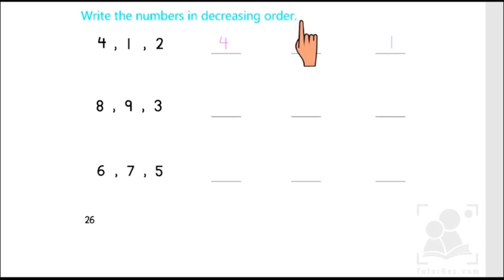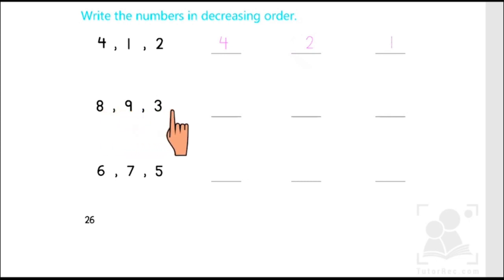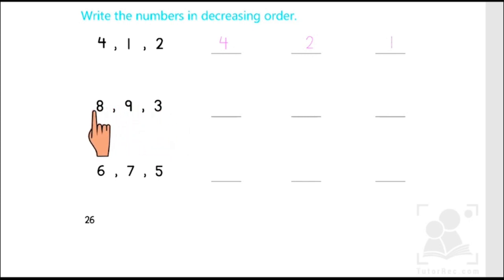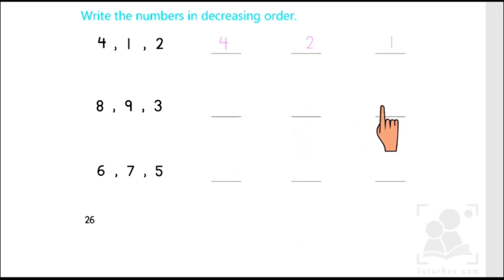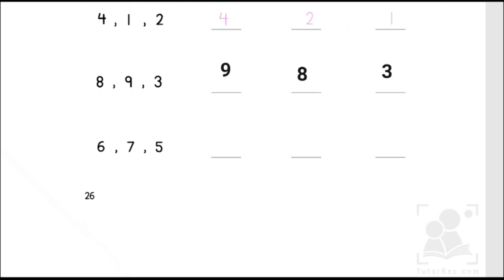Let's find the greatest number in the second row, which has 8, 9, 3. Amongst these three numbers, the greatest one is 9, then 8, and the smallest one is 3. So we are going to write: 9, 8, and 3.